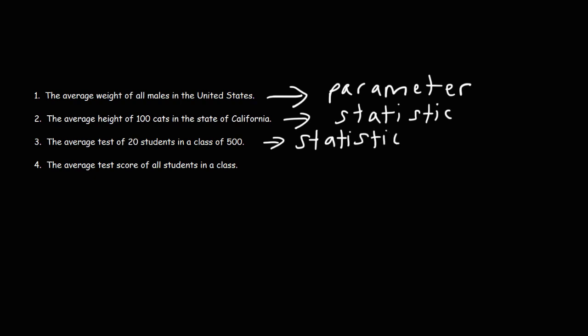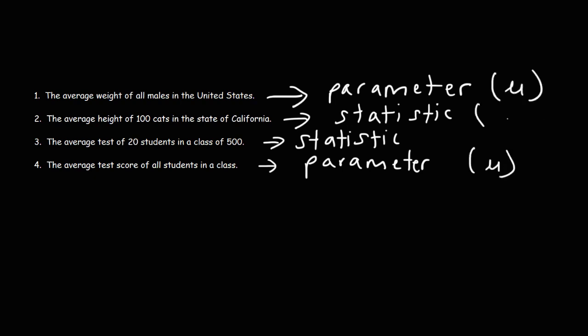Number four: the average test score of all students in the class. That is the entire population, so the average test score would be a parameter. Since we're dealing with means, the symbol for numbers one and four would be mu, and for two and three the symbol would be x-bar to represent the sample mean. So now you know the difference between a statistic and a parameter, and also the difference between a sample and a population. Thanks for watching.